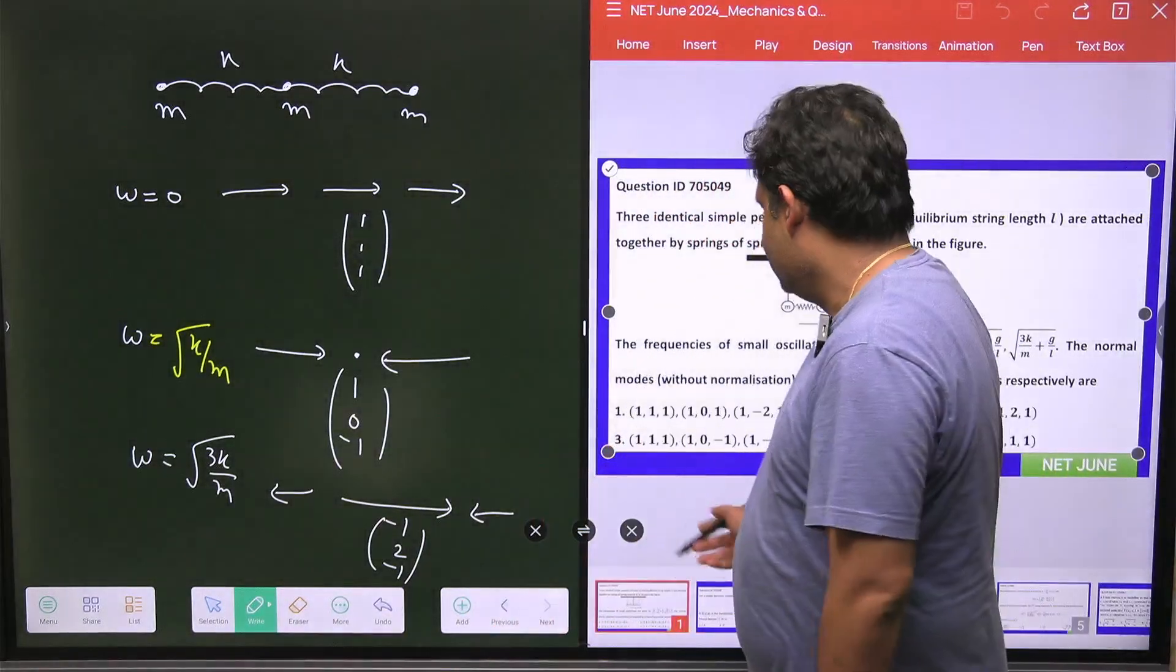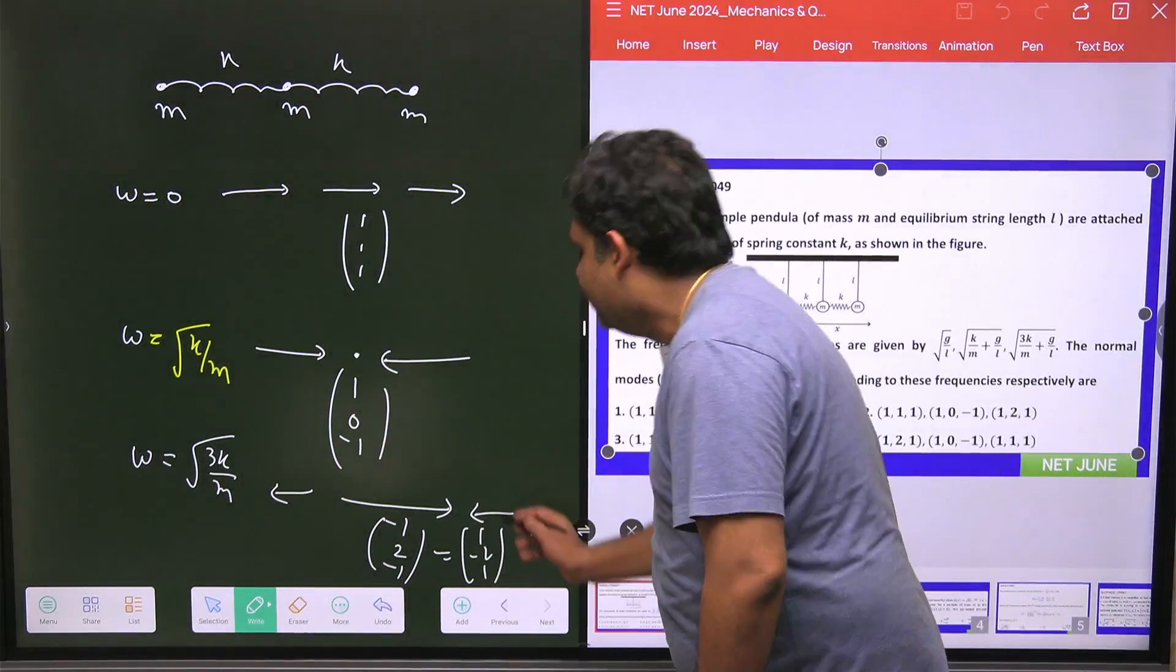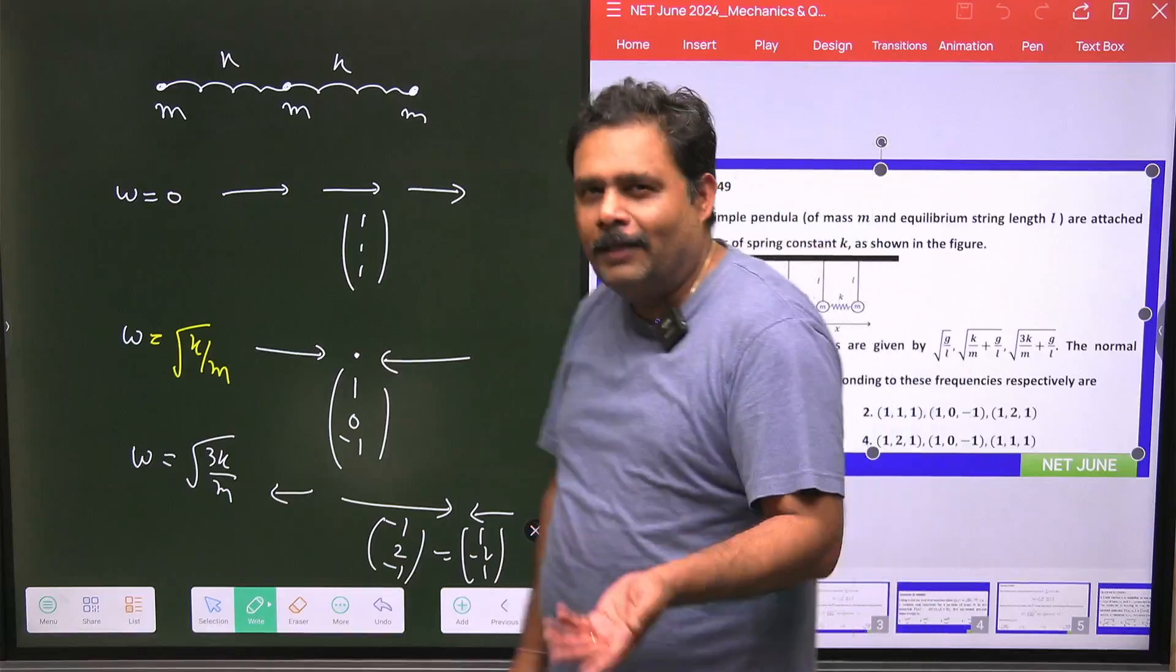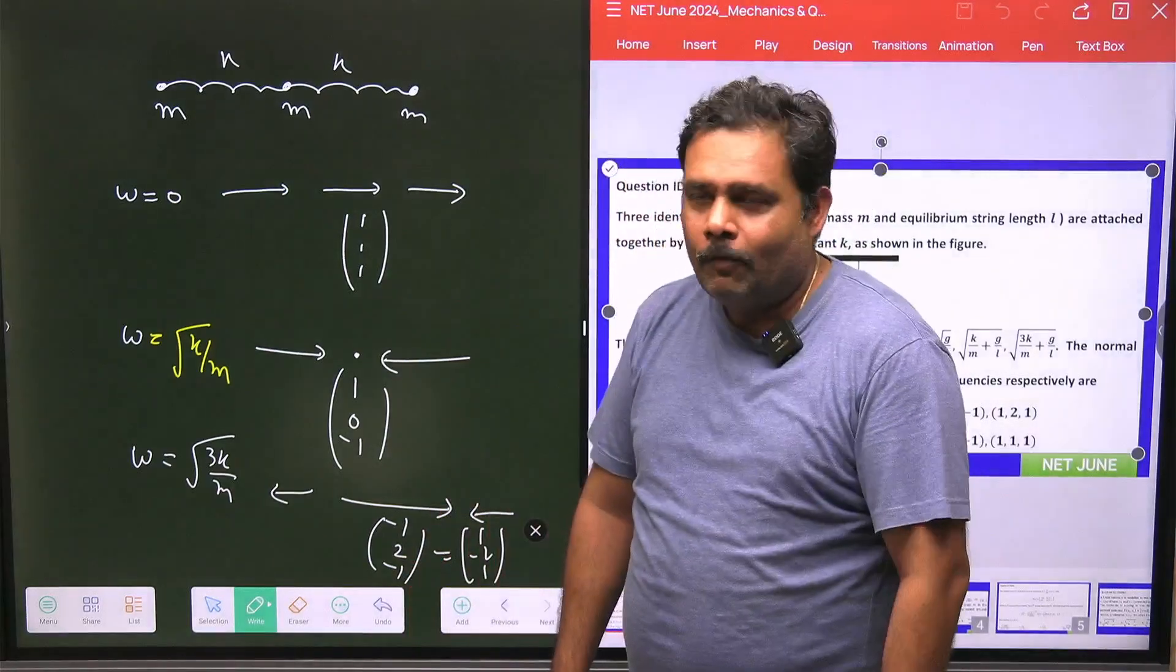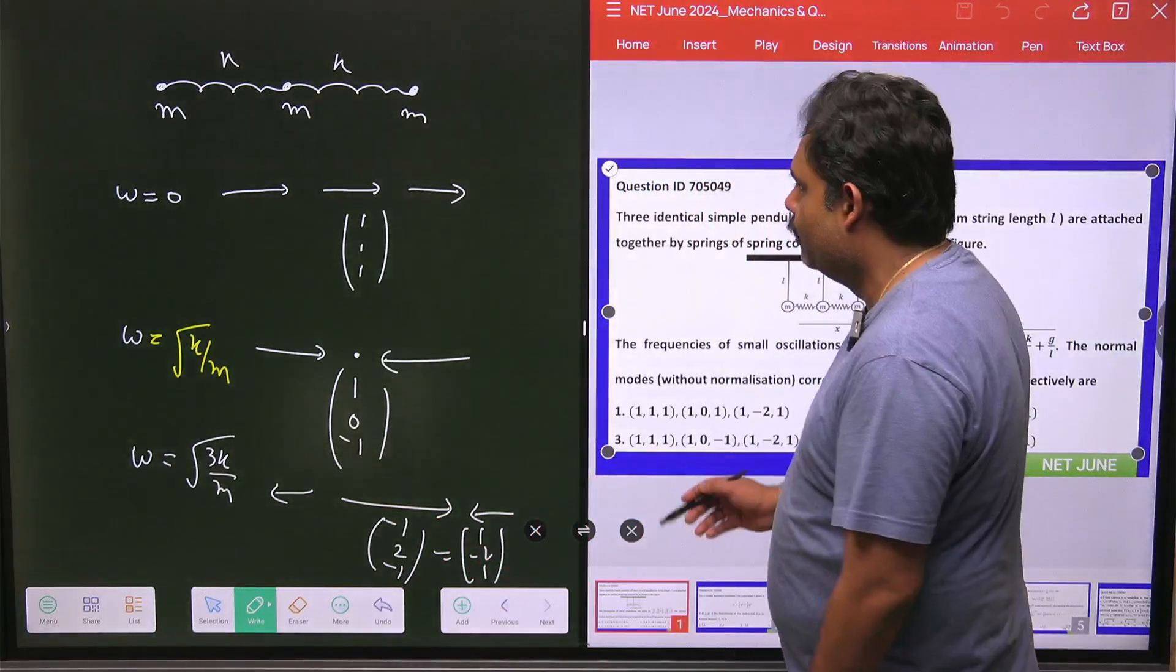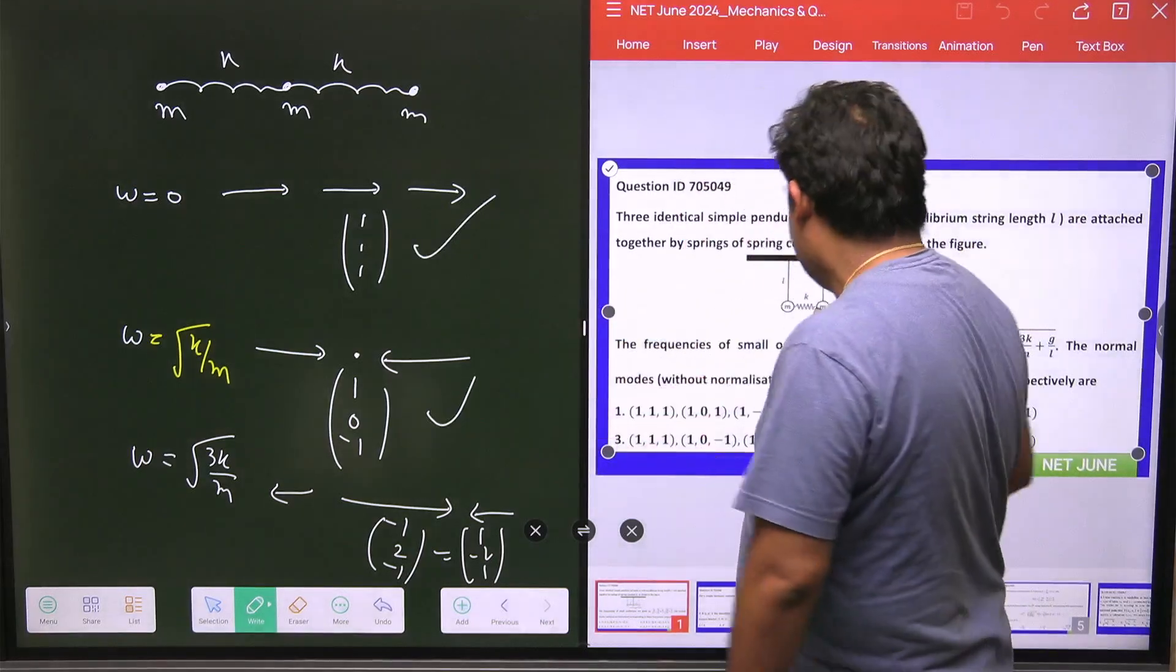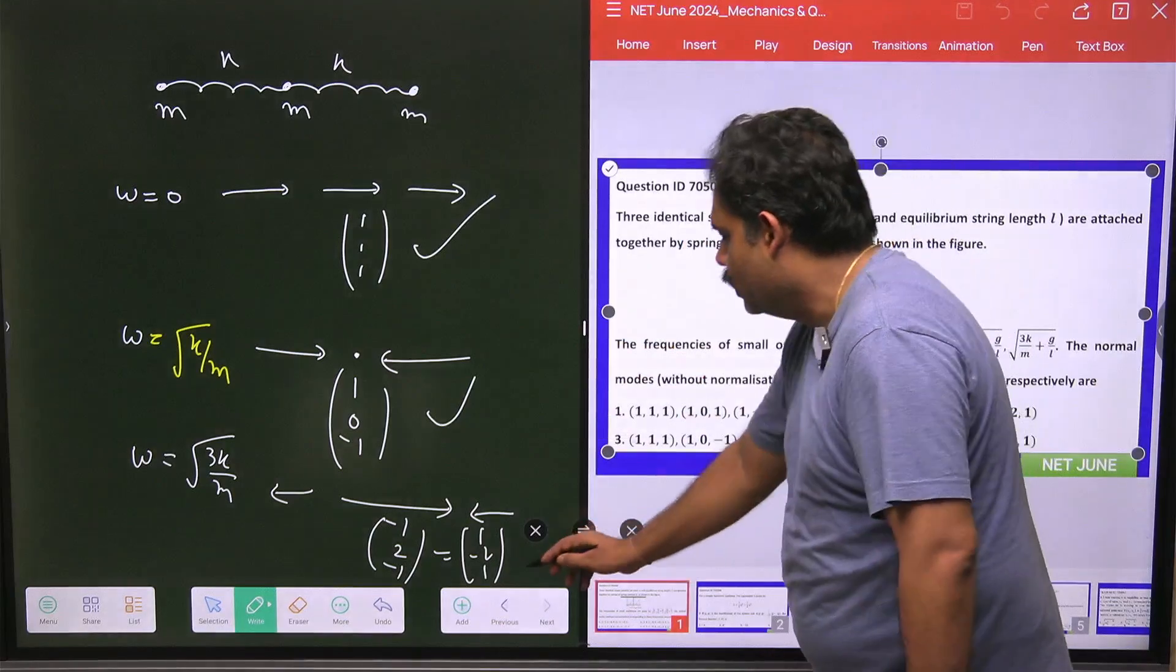So what will be your answer? If you are going for this, I can write this one in matrix form: 1, minus 2, 1. That will tell you exactly the same mode. It will depend on what is your x-axis and what is your y, what is your negative x. So if you are going to match the answer, then obviously 1, 1, 1; 1, 0, minus 1. So this is there, this is there, and this is 1, minus 2, 1. So this will be there.